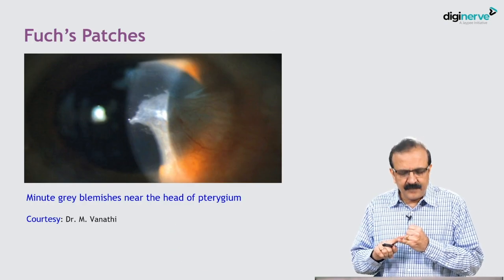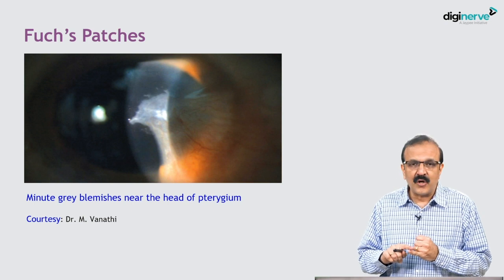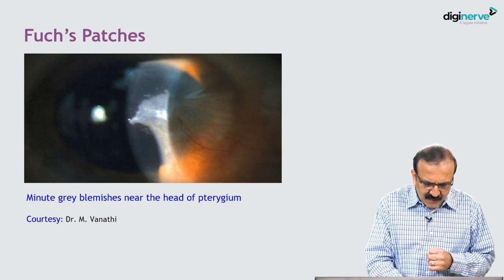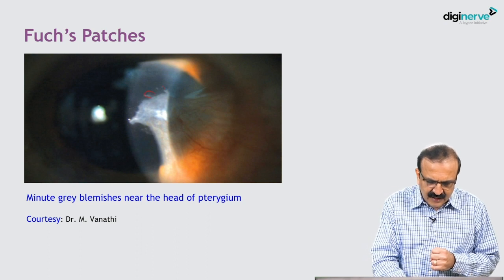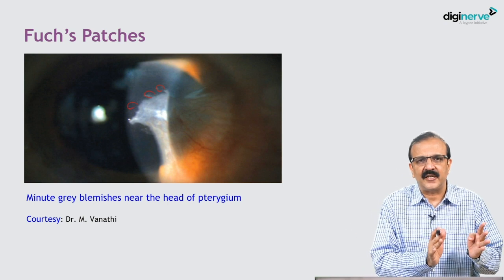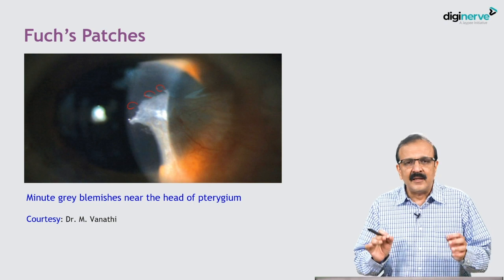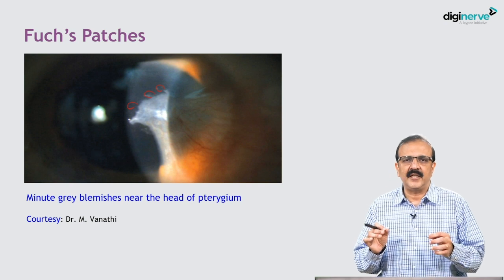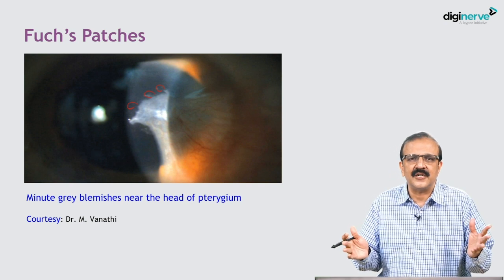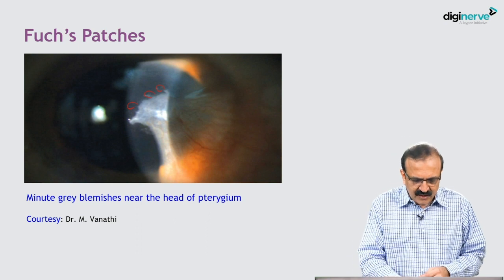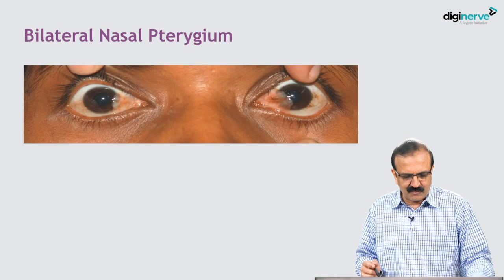We talked about Stocker's line as one clinical sign. The second thing is Fuchs' patches. These are isolated islands detached from the cap of the pterygium, not continuous with it. They are described as minute gray blemishes near the head of the pterygium — something like a satellite lesion, not actually connected with the pterygium proper.